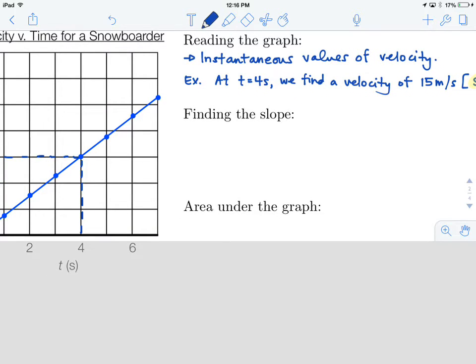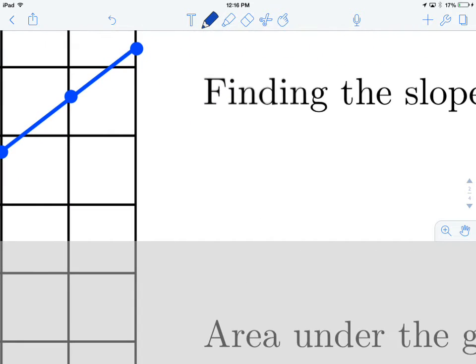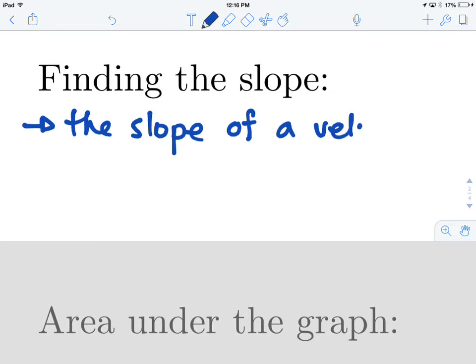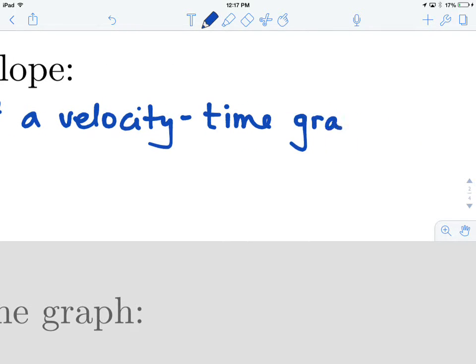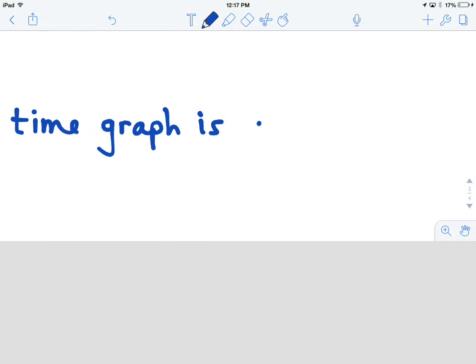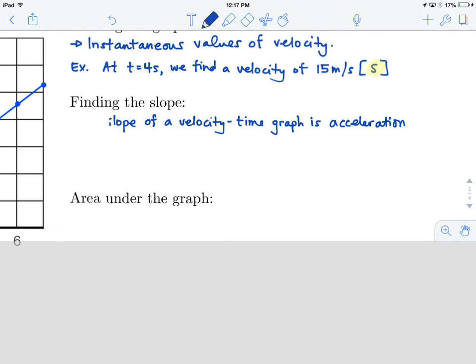All right, finding the slope. So what can we get from this? Well, we know, or one of the essential learnings is that the slope of a velocity time graph is acceleration. This is a very, very important thing to remember. Slope of a VT graph is acceleration.